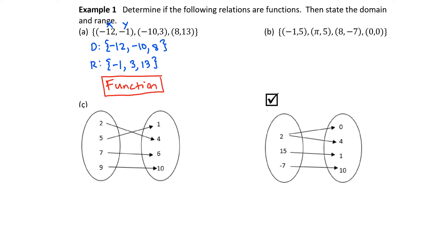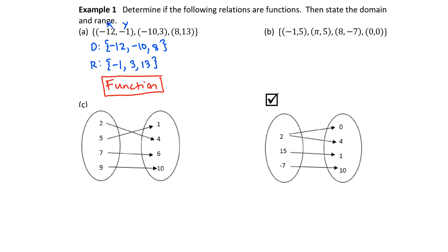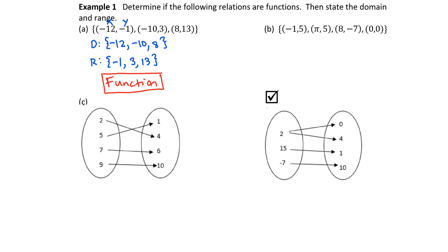It is a relation, and more specifically, yes, it is a function. Example B is another set of ordered pairs. The first component is x and the second component is y in each ordered pair. We will group the x's together to form the domain. So the domain has values negative 1, pi, 8, and 0.